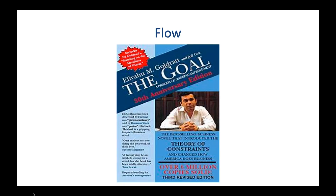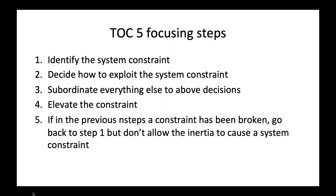Dr. Goldratt came in and really focused on the Theory of Constraints. The idea was that there is typically one constraint in the process driving the flow through the organization. If you try to keep everybody busy, you end up building way too much inventory in the system and you're not getting throughput. He came up with his five focusing steps to improve flow through the organization, starting with understanding the system constraint.